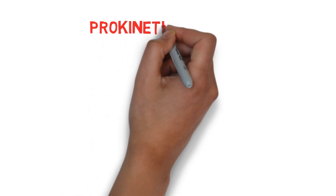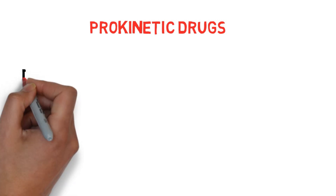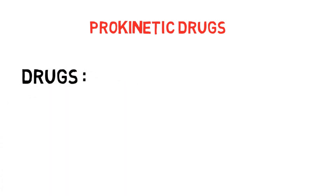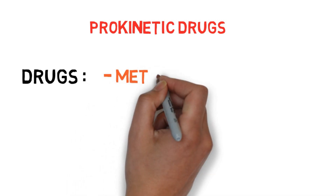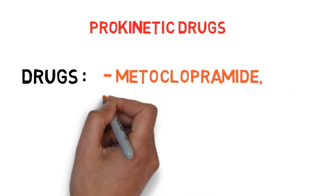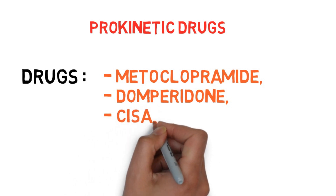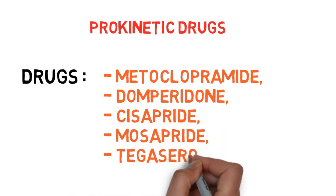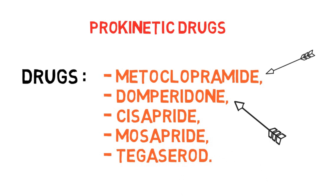The next topic is prokinetic drugs. We will discuss briefly about the mechanism of action, uses, contraindications, and adverse effects of the two main drugs: metoclopramide and domperidone. As we can see on the screen, the prokinetic drugs are metoclopramide, domperidone, cisapride, mosapride, and tegaserod, but we will be focusing on metoclopramide and domperidone.